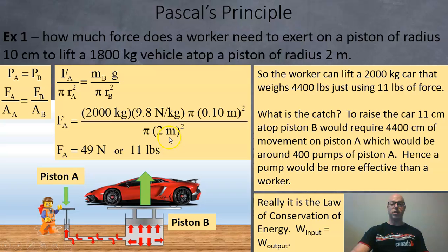The two pi are going to cancel out and when you work this out all you need is 49 newtons, and if you convert newtons to pounds by multiplying by 2.2 divided by 9.8 that's exactly 11 pounds of force to lift the car. So you can lift this 2,000 kg car which weighs 4,400 pounds using just 11 pounds of force.